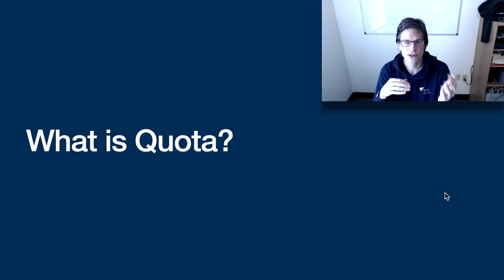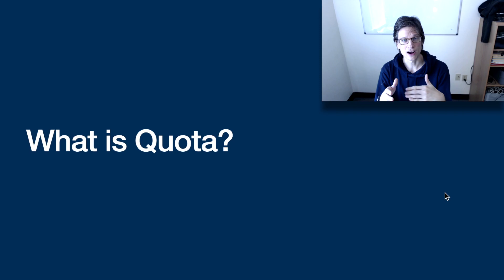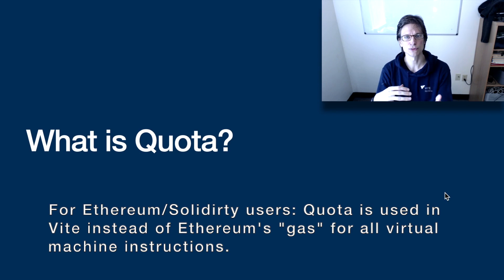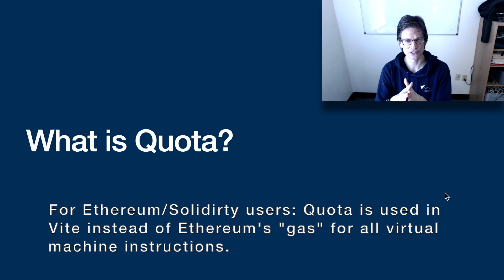Quota is Vite's anti-spam mechanism. The reason Vite has quota is because all transactions in Vite are actually free — they don't cost anything to send. But that would make it so that people could spam the network, and to prevent that sort of spam and wasting of resources, you need some sort of mechanism to prevent that. That's what quota is.